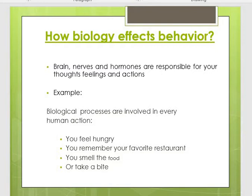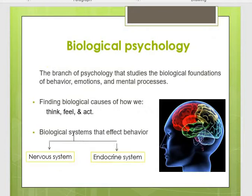For example, when you feel hungry, your stomach sends a message to your brain, the brain processes it, and you start eating. You remember your favorite restaurant; you smell the food or take a bite — these are all biological and physiological processes. In biological psychology, we find biological causes for our behavior: what we think, what we feel, and how we act. Basically, two systems are involved — the nervous system and the endocrine system.